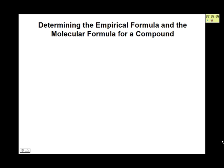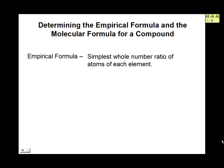Determining the empirical formula and the molecular formula for a compound. The empirical formula is the simplest whole number ratio of atoms of each element. For example, the empirical formula of decane is C5H11. This means there are 11 H atoms for every 5 C atoms.